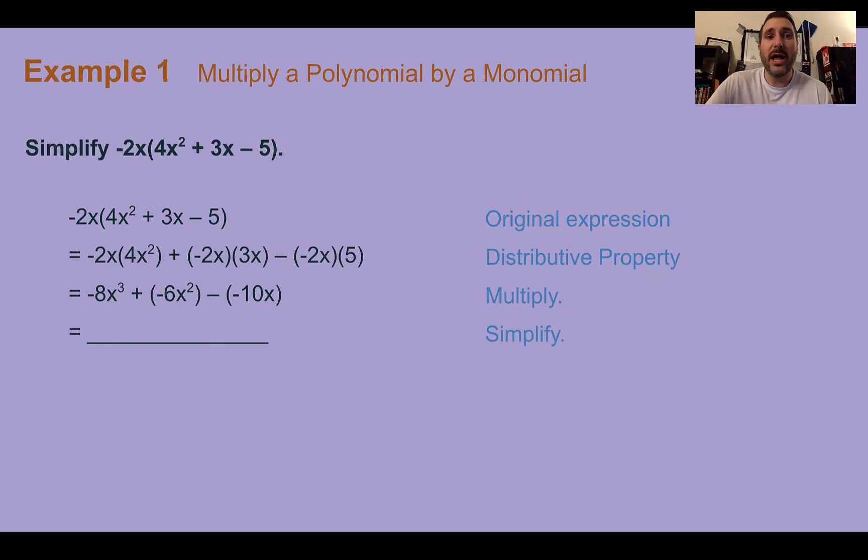Example 1. Multiply a polynomial by a monomial. Simplify -2x(4x² + 3x - 5). For this, we're just going to use the distributive property and multiply everything out. So if we have -2x times 4x², and then -2x times 3x, and then we're going to subtract the 5 times the -2x as well. We can see that down here, the -2x is multiplied by everything.